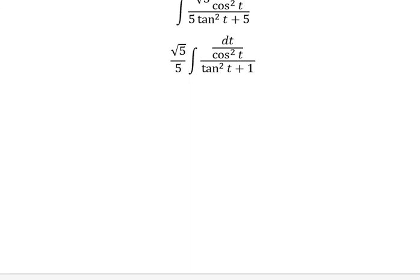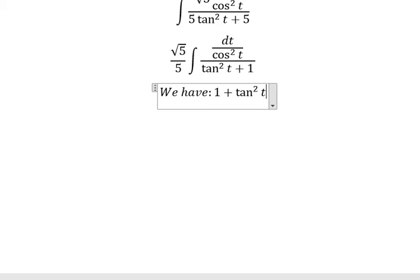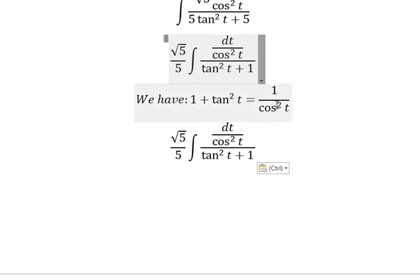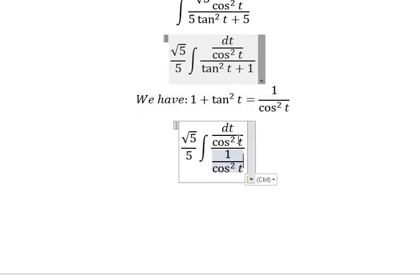We have the trigonometric identity: 1 plus tan² t equals 1 over cos² t. This goes in here - cos² t divided by cos² t cancel together.